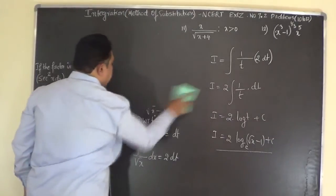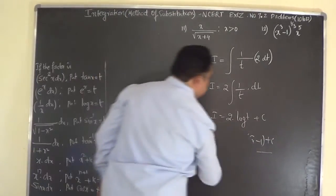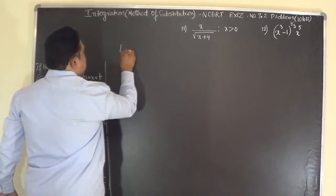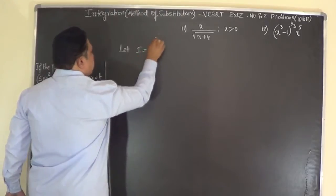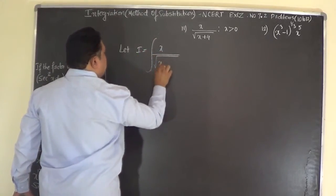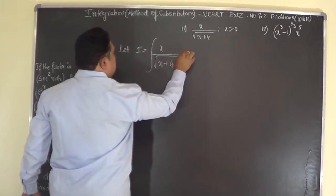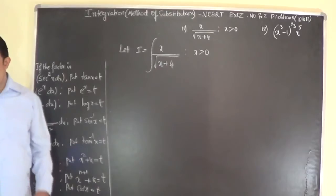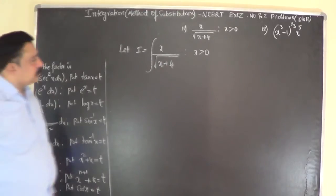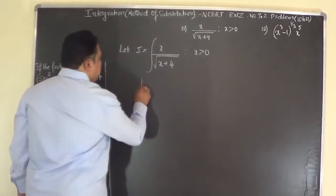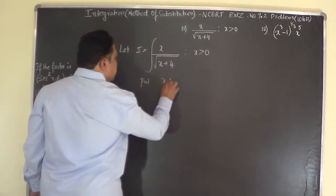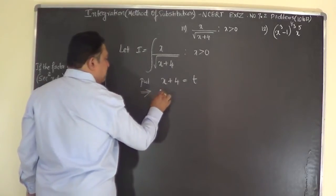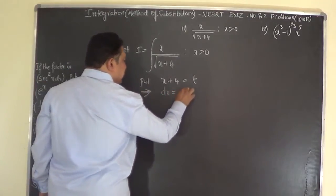Problem 10 is done. Now for problem 11: let I equal the integral of x over √(x plus 4) dx, where x is always positive. Put x plus 4 equals t.